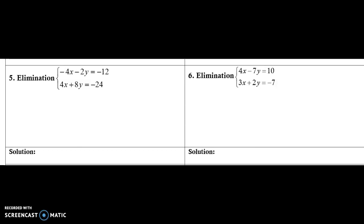Positive 8 and a negative 2 are going to give me a positive 6y, and when I add the negative 12 and the negative 24, that's going to give me negative 36. So divide both sides by 6, I know my y is going to be negative 6.